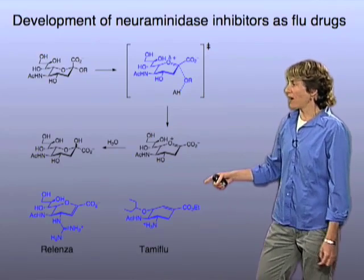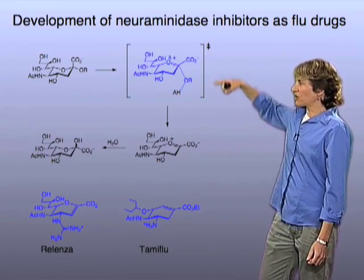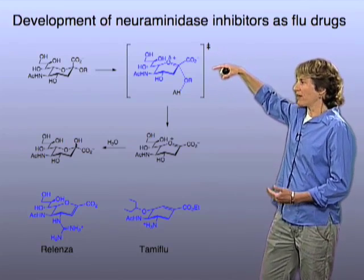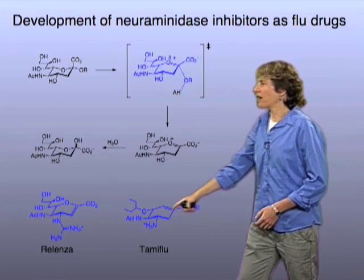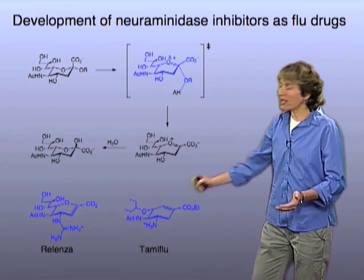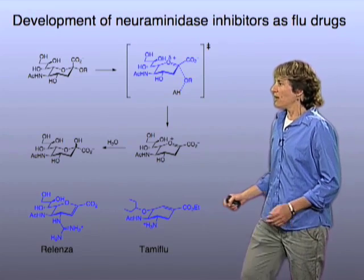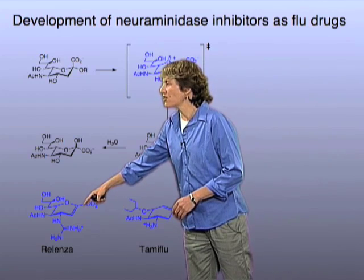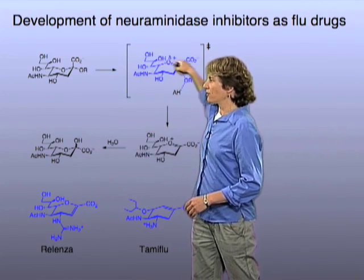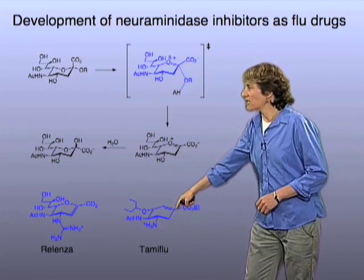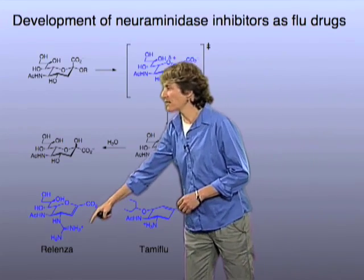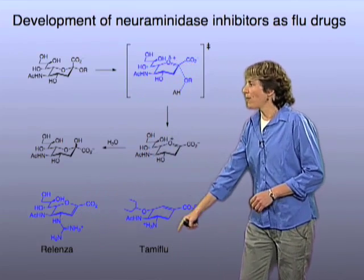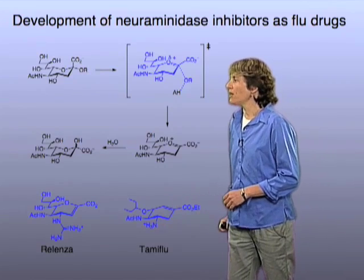What several pharmaceutical companies did is to look at the structure of this presumed transition state and try to mimic that structure with synthetic molecules that are somewhat reminiscent of sialic acid. For example, this compound has the sp2 hybridization at this carbon, similar to the transition state, and so does this compound. This compound has a positive charge in the form of this guanidino group, and this compound has a positive charge in the form of this amino group.